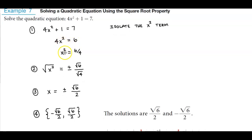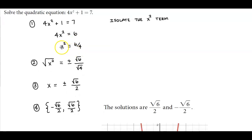Now we still need to isolate the x squared term by dividing both sides by 4. So we get x squared, which is equal to 6 fourths. Now we could reduce this if we wanted to, but I would recommend that you wouldn't because we already have a perfect square in this particular problem.